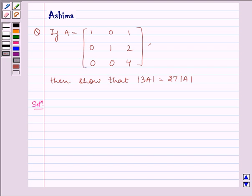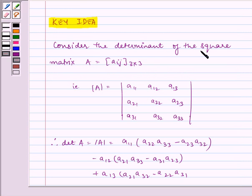Before writing the solution, let us see the key idea. Consider the determinant of the square matrix A equals aij, 3 by 3. That is, determinant A equals a11, a12, a13, a21, a22, a23, a31, a32, a33.